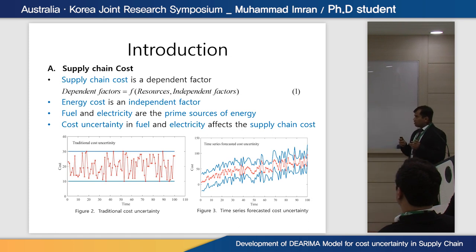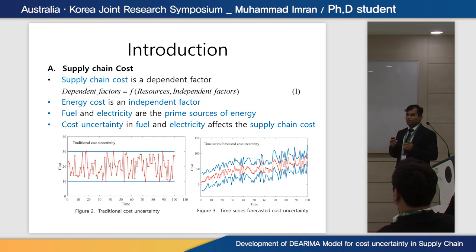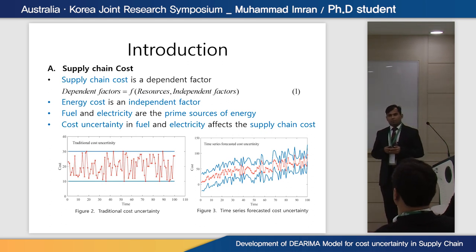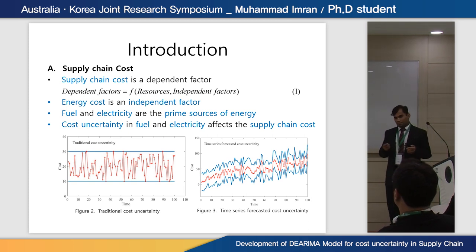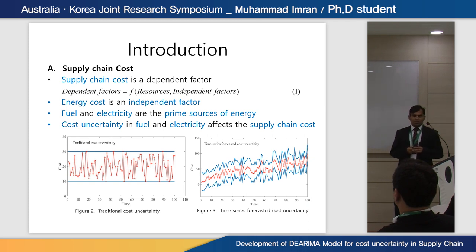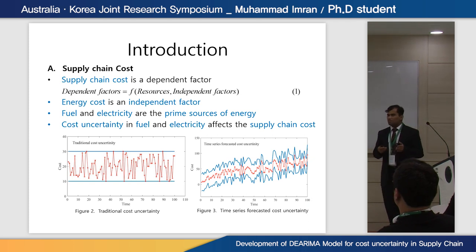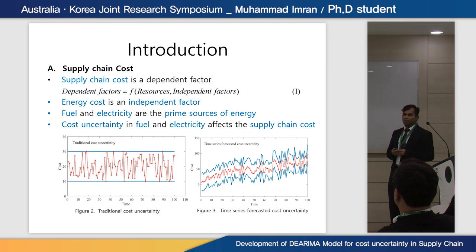Traditional cost uncertainty models consider cost values fluctuating between two fixed limits. However, in reality the future cost value must be dependent on the past value and should follow some trend. Therefore, we are considering time series forecasted cost uncertainty, which is a more practical criterion for modeling uncertainty in cost.